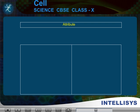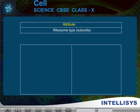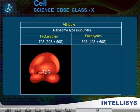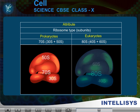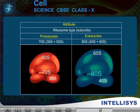Attribute: Ribosome type. In prokaryotes, it is 70S — subunits are 30S plus 50S. In eukaryotes, it is 80S — subunits are 40S plus 60S.